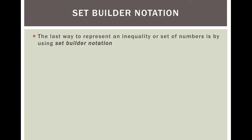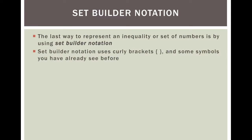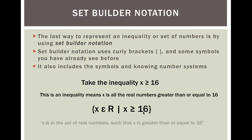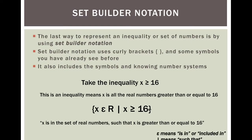Now let's talk about set builder notation — the last way to represent an inequality or set of numbers. Set builder notation uses curly brackets and some symbols you have already seen when dealing with number systems. This little backwards E means 'is in' or 'included in,' and the bar means 'such that.' It's just mathematical symbols.